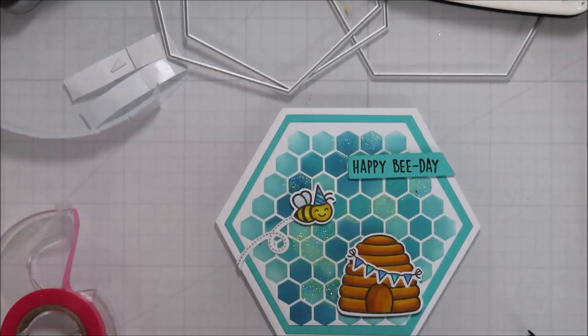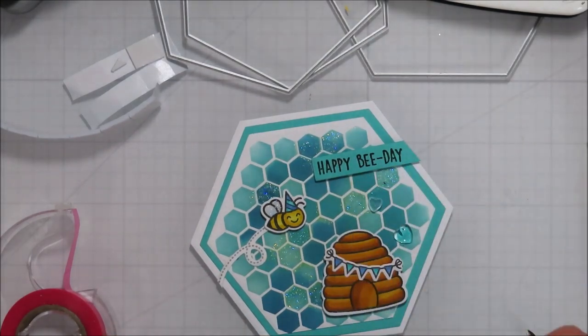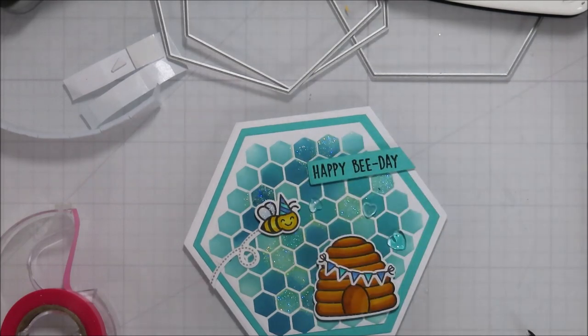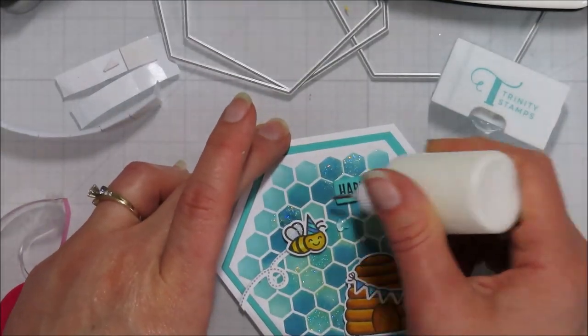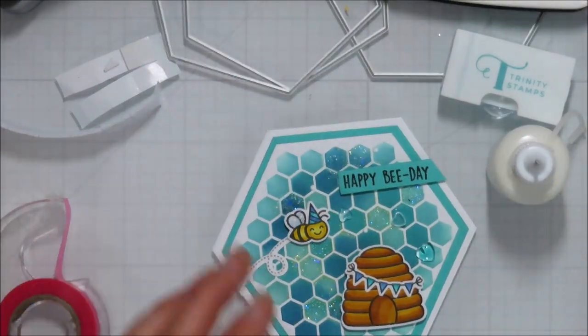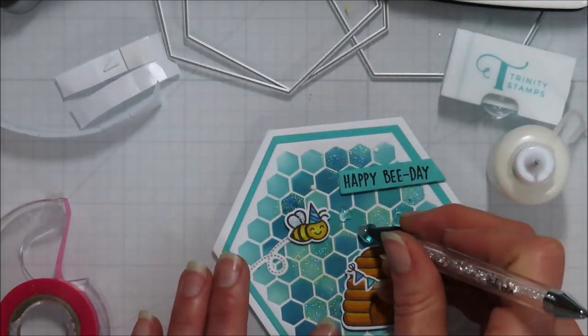I felt it needed just a little bit of something, not too much, but just something subtle. So I went with the Trinity Stamps Boiled Sugar Clear Hearts just to add that little bit. It doesn't really take away from the scene, and it just adds just a little bit of, I don't know, a finishing touch.